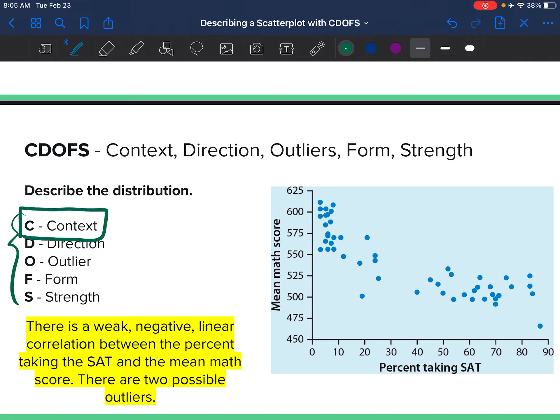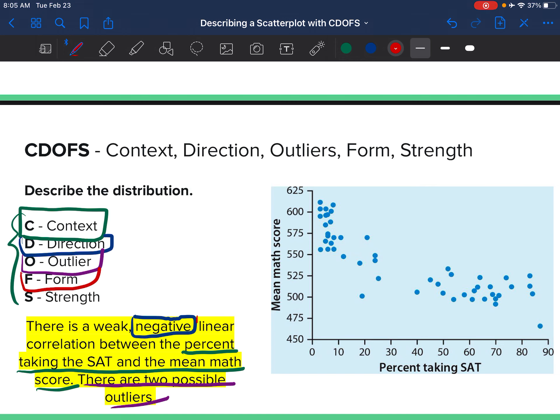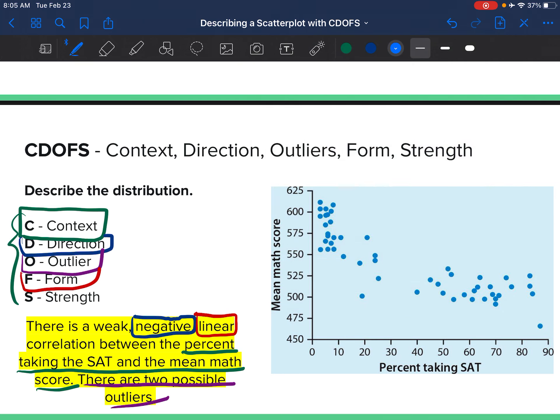I want to check to make sure that I have all five pieces because that is how you have a complete description. Context: what is this graph about? I have percent taking the SAT and the mean math score. Direction: I say it's negative. Outlier: there are two possible outliers. Form: I say it's linear. Finally, strength: I say it is weak.